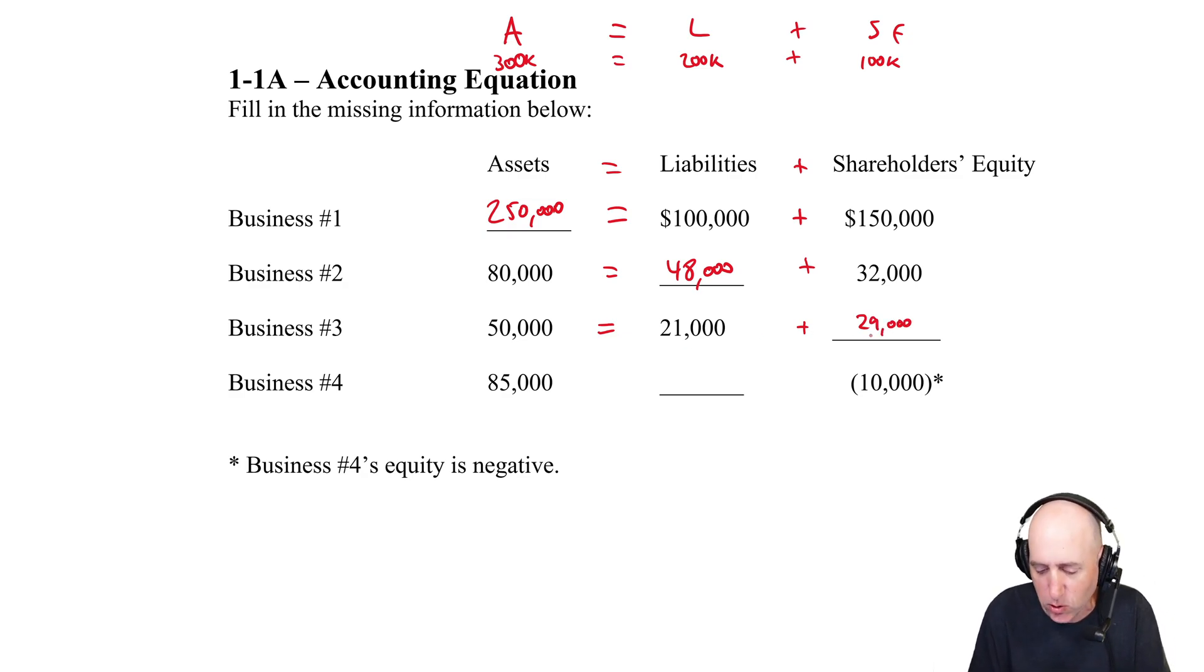It's bad for companies too. This is not just a home equity example - it can happen for companies. When they're in a negative equity situation, they're in big trouble. Company business number four is in big trouble because the liabilities are greater than the assets. The value of what you owe is greater than the value of what you own.